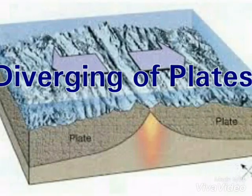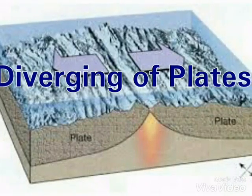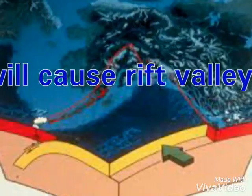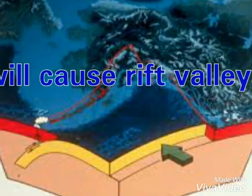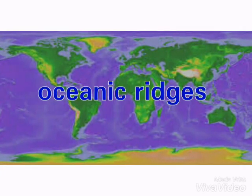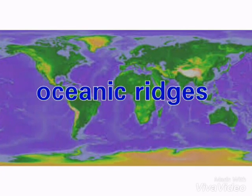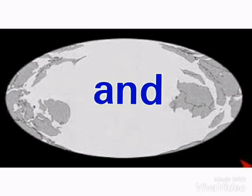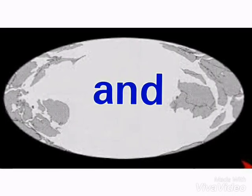Diverging of plates will cause rift valleys, oceanic ridges, and earthquakes.